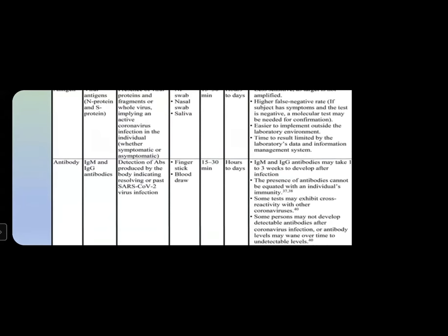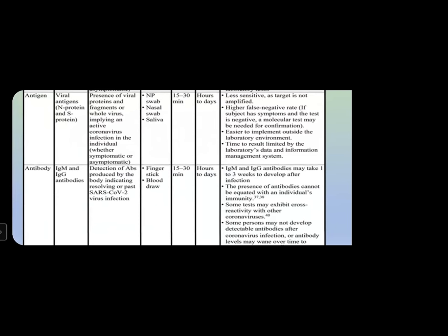Antibody tests like the paper-based finger prick test detect the antibody produced by the body — IgM and IgG. However, IgM and IgG antibodies may take one to two weeks to develop and the presence of antibodies does not confirm active infection, as a vaccinated person who is not infected will still have IgG and IgM antibody. So it is not very accurate for diagnosing active infection, but it can indicate community presence for serosurveillance purposes.